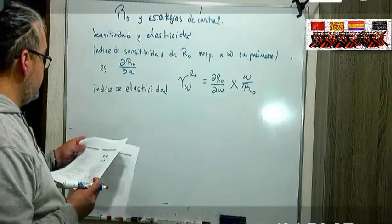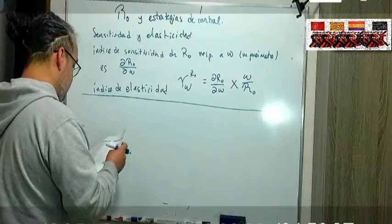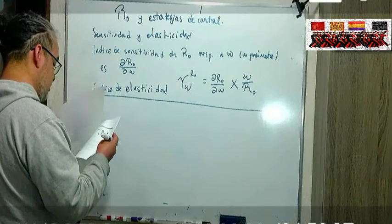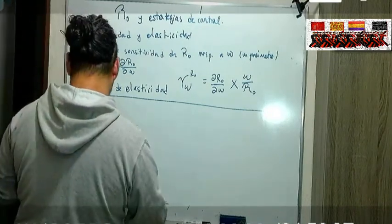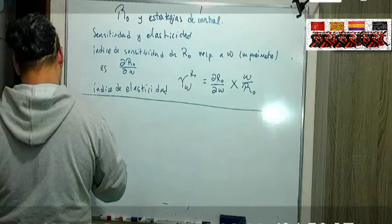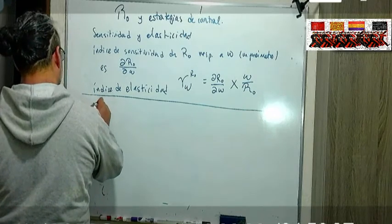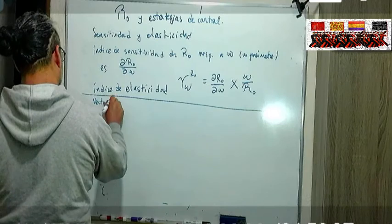Entonces vamos a ver un ejemplo, cómo usamos estas cosas para situaciones concretas. Vamos a ver dos ejemplos. El primero es un modelo de enfermedad vectorial, el vector hospedero, con la enfermedad del Nilo.